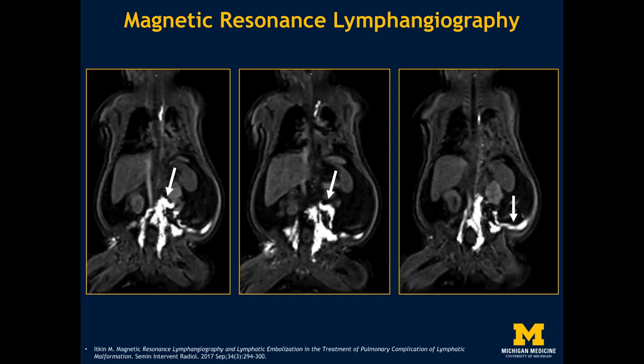A newer technique that Max Itkin helped develop is MR lymphangiography — essentially injecting contrast material into lymph nodes and performing dynamic gadolinium MR images to monitor contrast movement over time. This provides real-time interpretation of lymphatic disruption. Following sequential images, you can see the disruption of the lymphatics and contrast collecting in the abdominal space — real-time evidence that a lymphatic disruption exists and that a lymphatic intervention could potentially be successful.